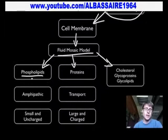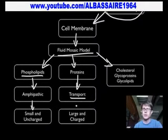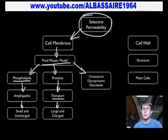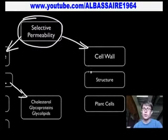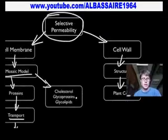Phospholipids are amphipathic, meaning they have a part that likes water and a part that hates water — a dual nature. They allow small and uncharged particles to move through the membrane. Proteins are found within the membrane and mostly regulate transport — what can get through and what can't — allowing things that are bigger and charged to actually get through. Selective permeability in all cells is formed through the cell membrane, and all living things have cell membranes. Not all living things have cell walls, which give more structure. Animals don't have cell walls — we just have the cell membrane around the outside.